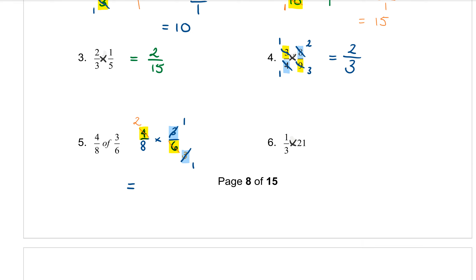So let's multiply what is left. On the top, 2 times 1 is 2. On the bottom, 8 times 1 is 8. But then I noticed I missed a factor — I could also cancel the 2 and the 8. We can cancel it now: dividing by 2 gives a 1 on the top and a 4 on the bottom. So the final, most simplified answer is 1 quarter.